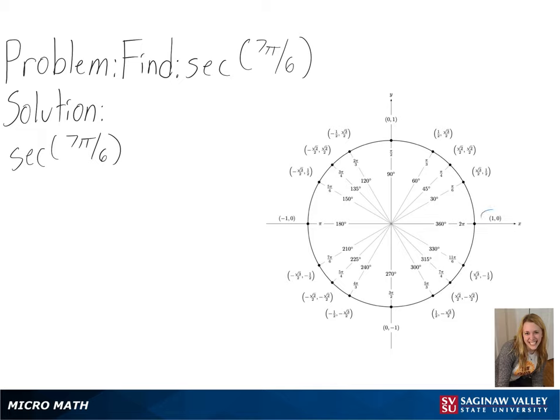So we will start at 1, 0, and then move counterclockwise until we have traveled the distance of 7 pi over 6.